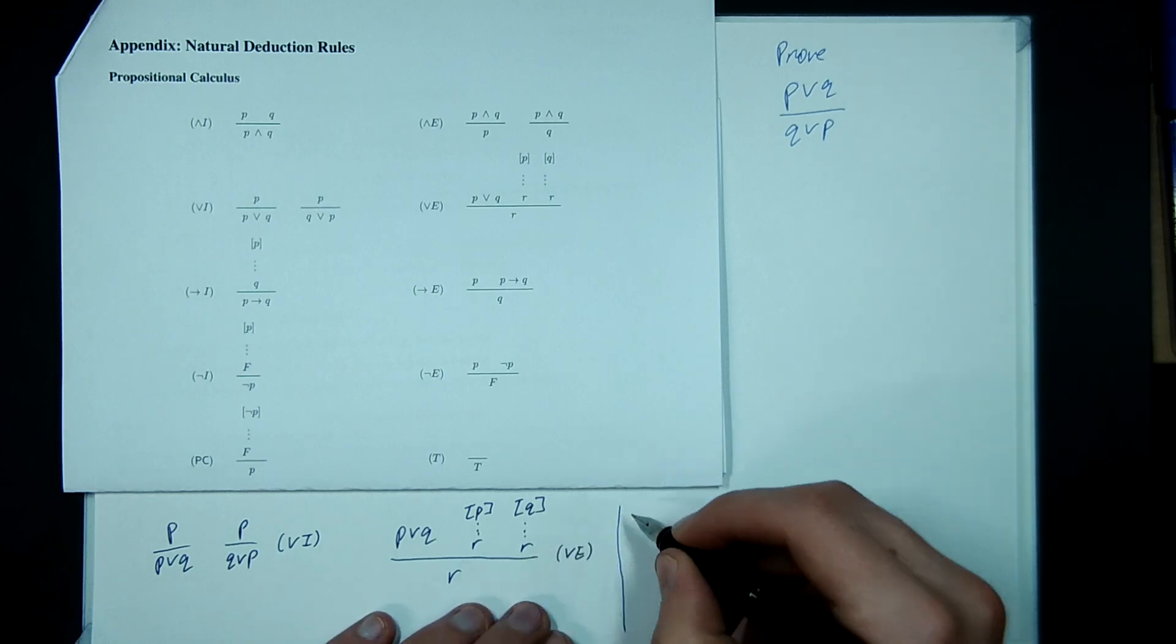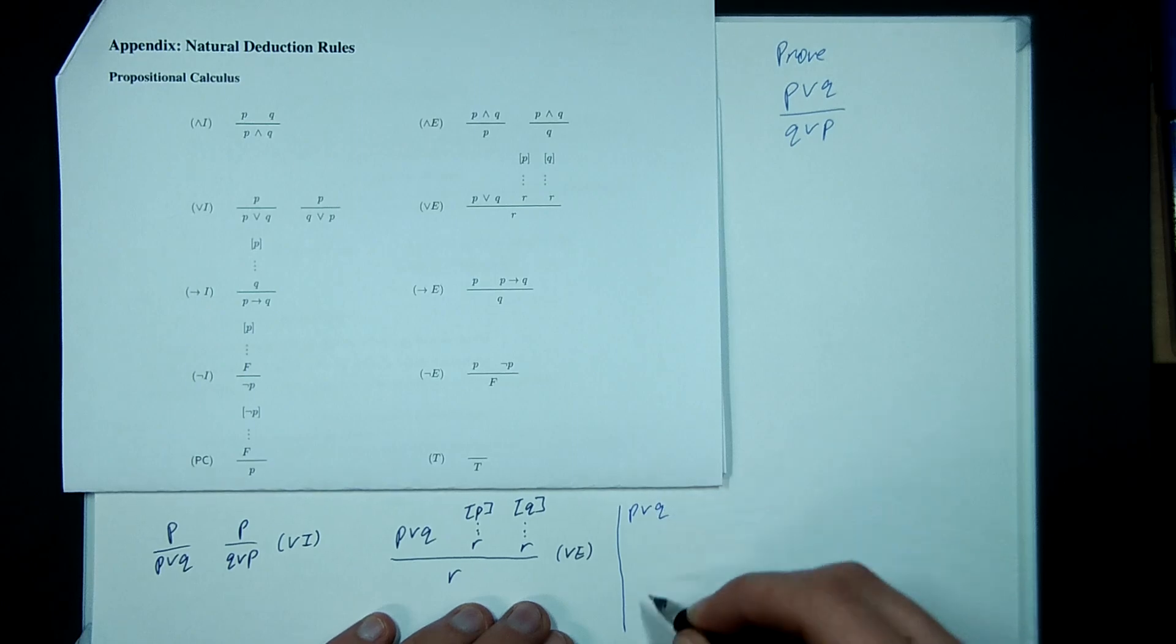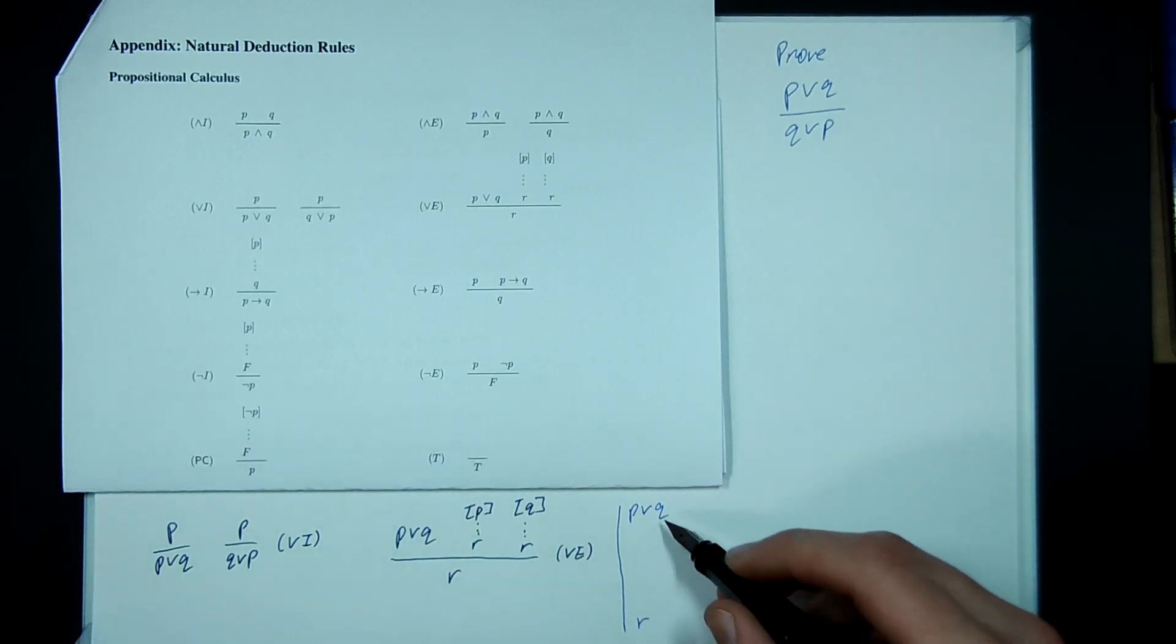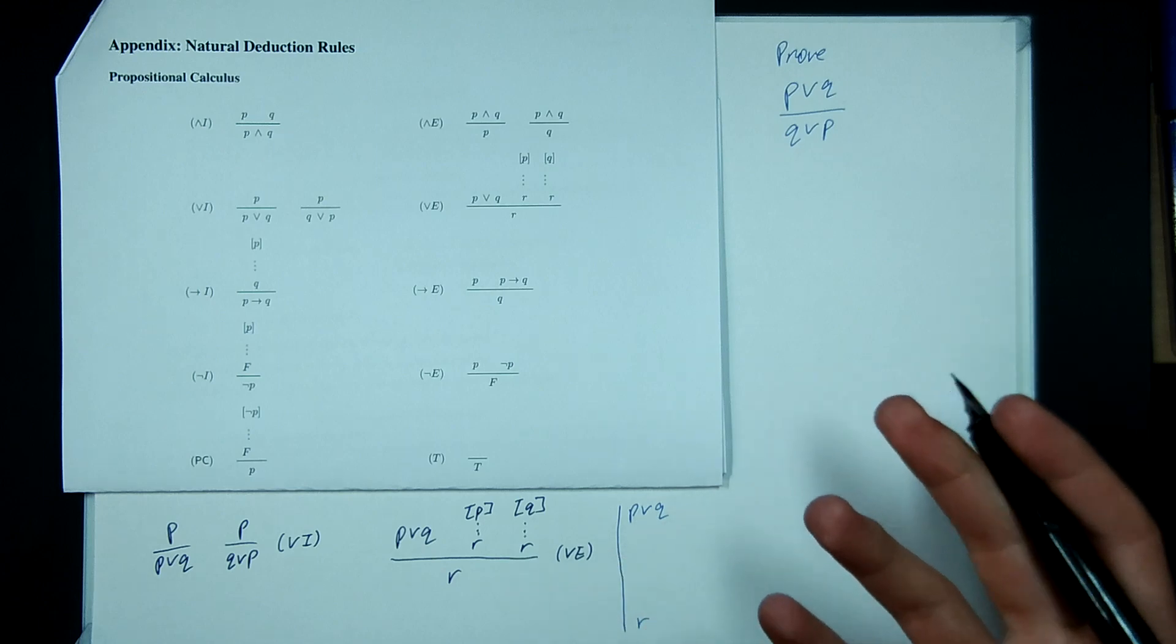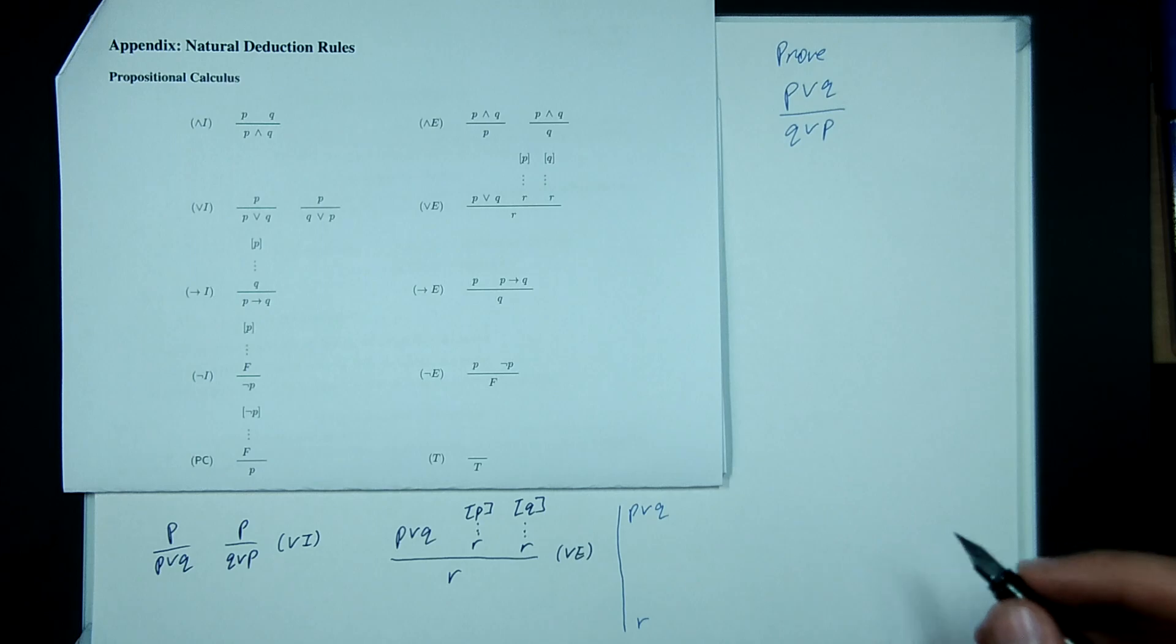So suppose you had P or Q and you were trying to get to R. I know that P or Q is true, which means either P is true or Q is true or they're both true. But I don't know which one, right?